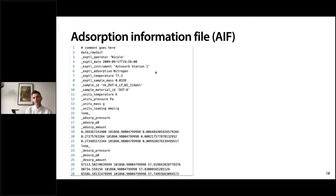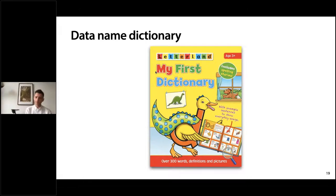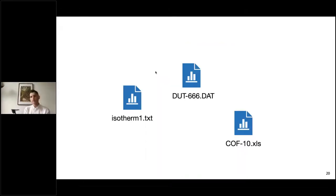The order of these entries doesn't have to be fixed — you can have your units first and experiment information next; it's really up to you how you arrange this information. What I have to state is that this is really the first dictionary and it is not a perfect dictionary to represent all different types of adsorption information. We're looking at improving and extending this dictionary in the very near future based on community discussions.